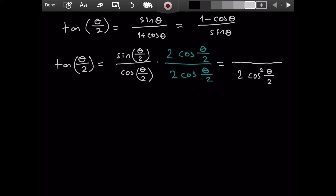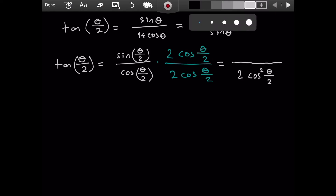On the numerator, we have 2 times sine of some angle times cosine of some angle. We know that 2 sine of x cosine of x is just equal to sine of 2x. I proved this in a previous video, which you can access from the cards or the description. Using this result, the numerator will be sine of theta.